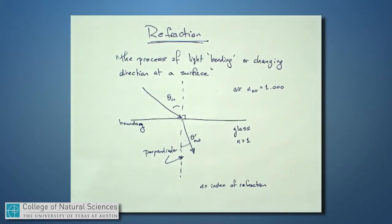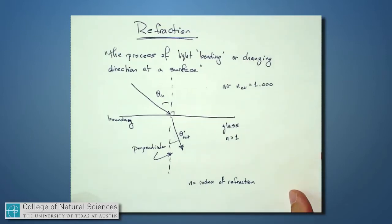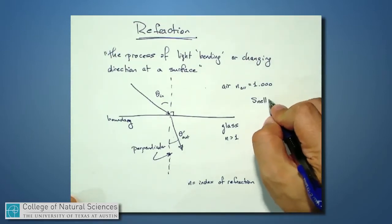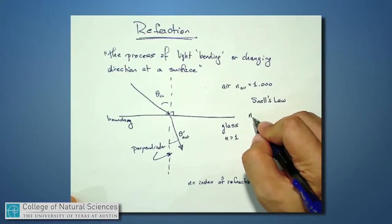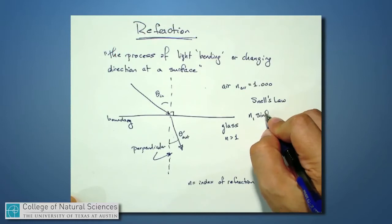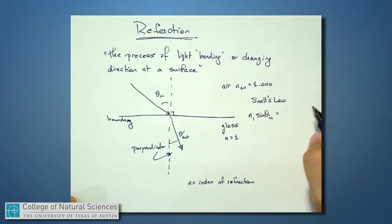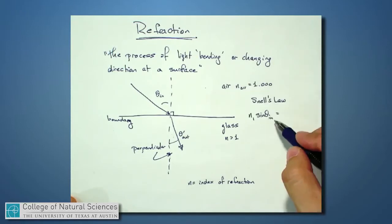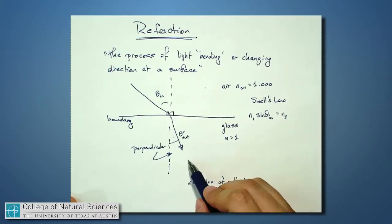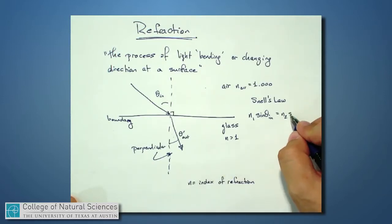There's a very well-known theorem in physics, or empirical law, and it's known as Snell's Law. And it says that the index of refraction on this side of the medium times the sine of the incident angle equals the second index of refraction on this side of the boundary times sine of theta out.